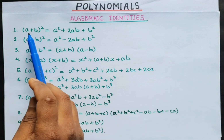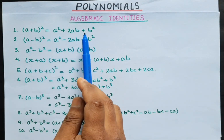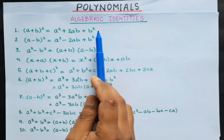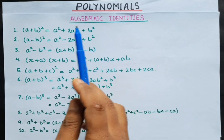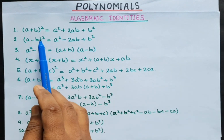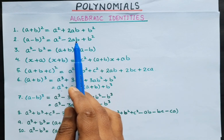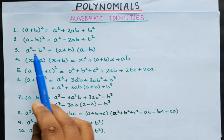First, (a + b) whole square is equal to a squared plus 2ab plus b squared. This is already written in algebraic identities. Second, (a - b) whole square is equal to a squared minus 2ab plus b squared.